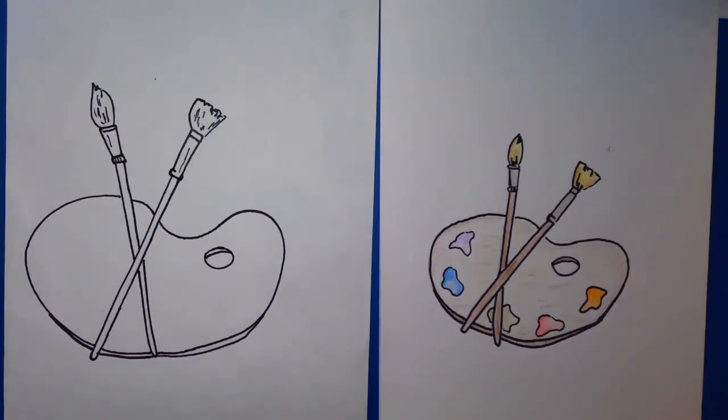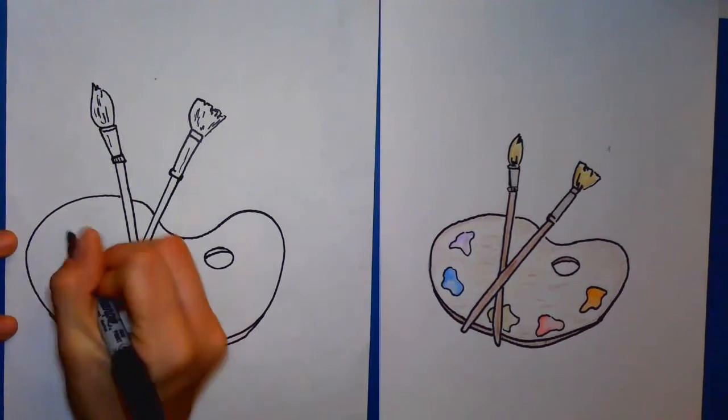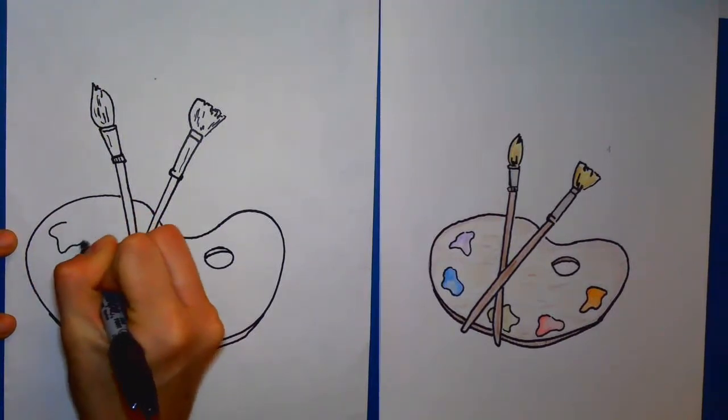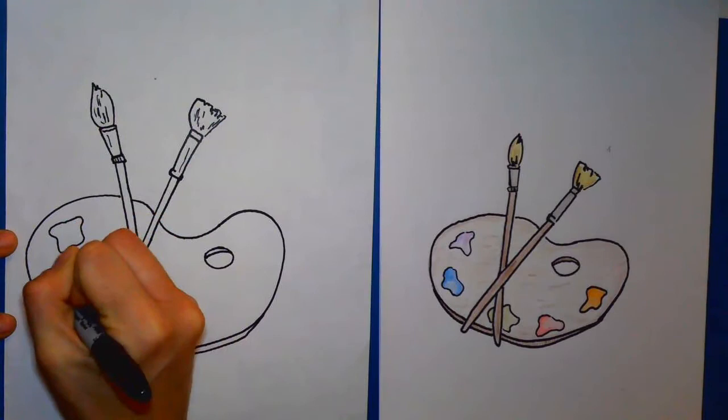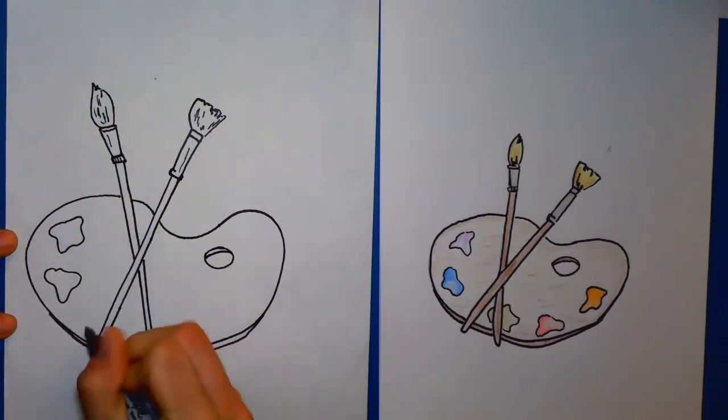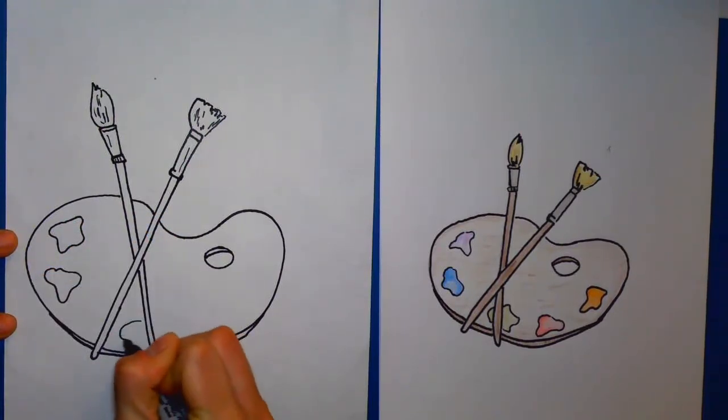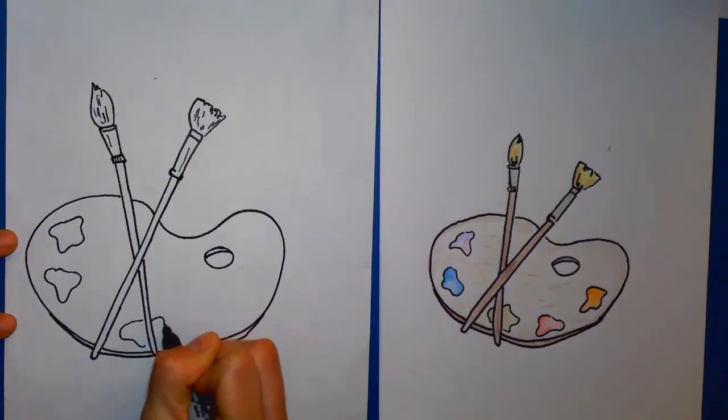Alright, and the last step is just to add some organic shapes for the paint blobs. I've never squeezed out paint in a perfect shape, so these can be however you envision it, however many you want.